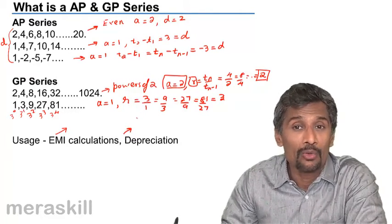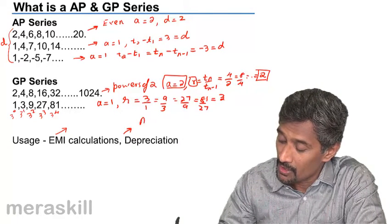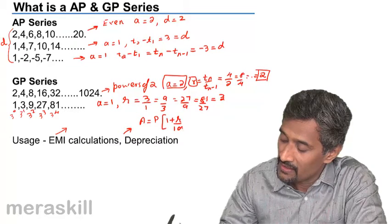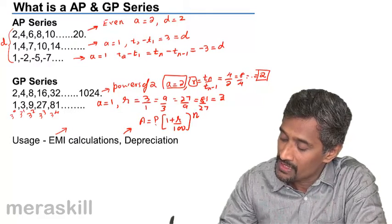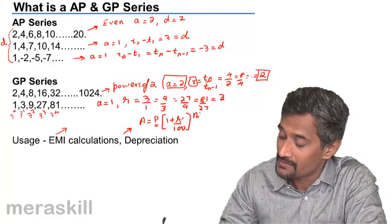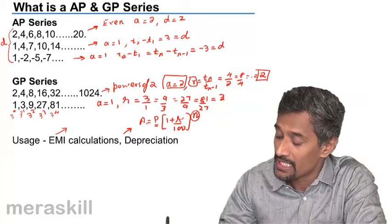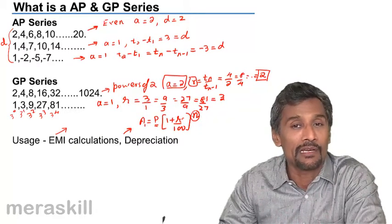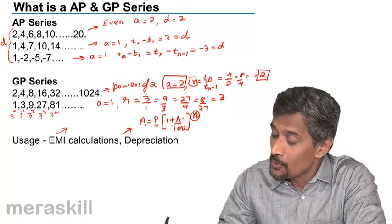The compound interest amount formula is P times 1 plus R by 100, the whole raised to n. P remains the same, R remains the same, but this n keeps on changing. So each amount A2 by A1 will always be 1 plus R by 100. This is geometric progression.